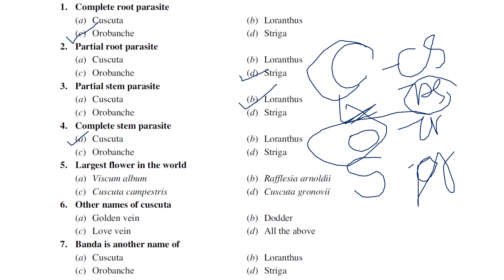Regarding the largest flower in the world: from the options Viscum album, Rafflesia arnoldii, Cuscuta campestris, Cuscuta gronovii — the answer is Rafflesia arnoldii, which reaches around two to three meters in width and is considered one of the largest flowers in the world.